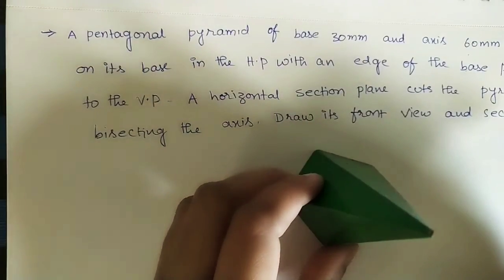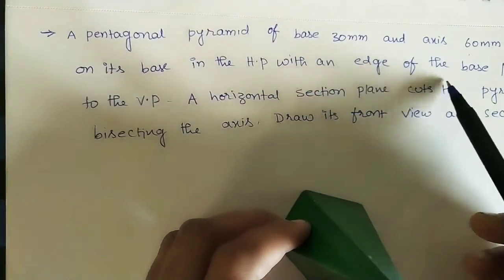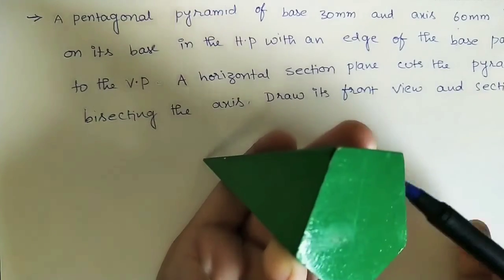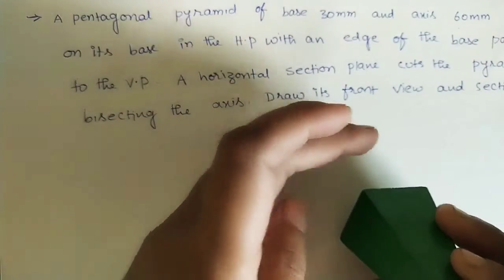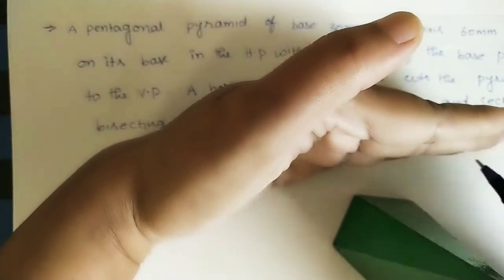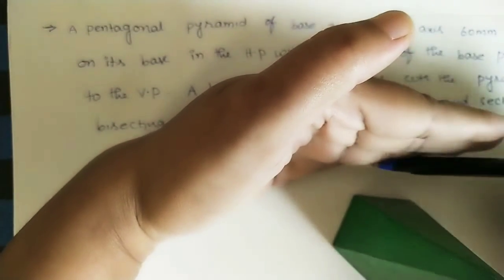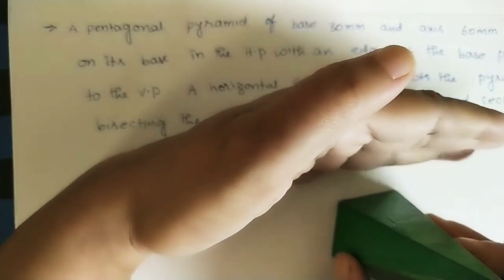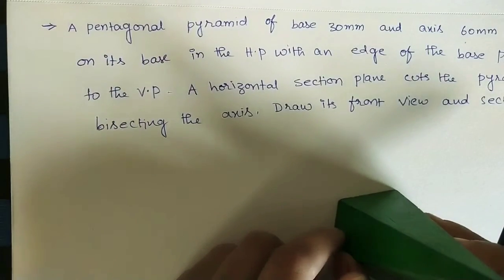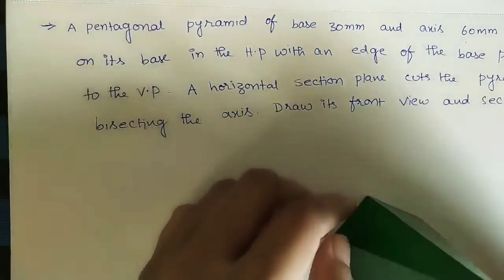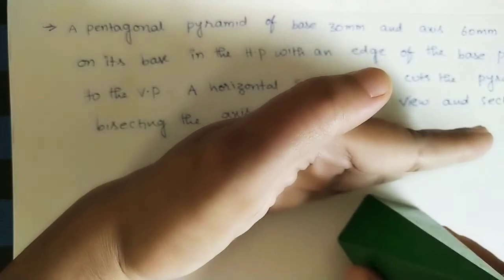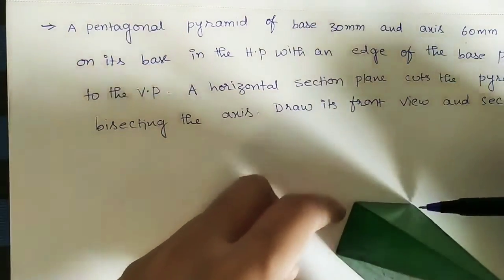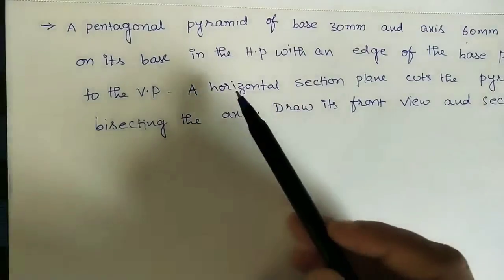With one edge of the base parallel to the VP — we can take any edge. This edge is parallel to the vertical plane, meaning the distance between the edge and the VP is constant throughout. If an edge had a tilting angle with the VP it would be tilting, but here it is parallel to the VP, so the distance is constant.